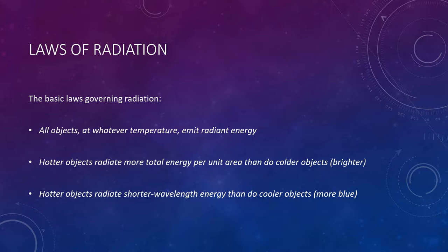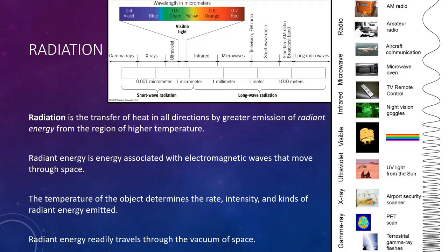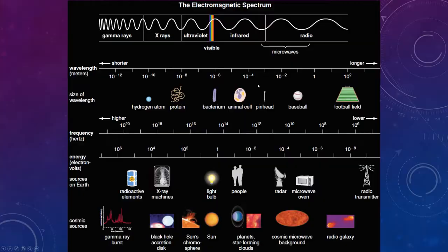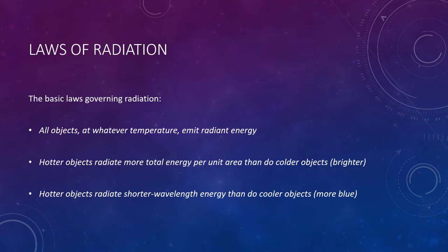Hotter objects also radiate more energy in the form of short wavelength radiation than do cooler objects — in other words, more toward the blue end of the spectrum. We can visualize this by imagining a metal bar heated to white-hot temperatures in a forge and then allowed to cool. As it cools, it gradually dims, and its color changes from white through yellow to red, as progressively more of its energy is radiated at longer wavelengths. Even when it is no longer glowing visibly, the still longer infrared radiation can be detected as heat by placing your hand near the metal.